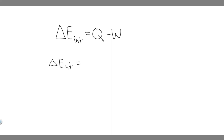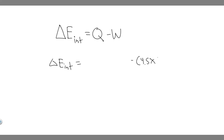Let's start with W first because it's only going to be one number. They're telling us the system does 4.5 times 10 to the 5 joules of work. Since the system is doing the work, it's going to be positive — so it's minus 4.5 times 10 to the 5 joules. If the work was done on the system, it would be negative, but since the system is doing the work itself, it's positive.